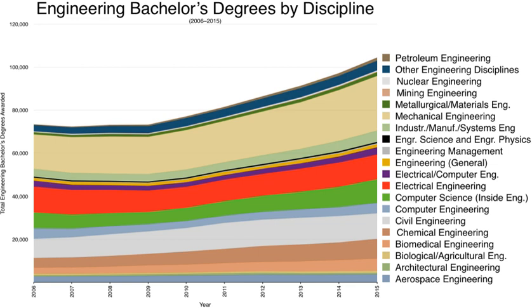The teaching language in Finnish universities of applied sciences is normally Finnish, but some universities use Swedish, and most offer some degrees in English. These universities also award a master of engineering degree designed for engineers already in working life with at least two years of professional experience.